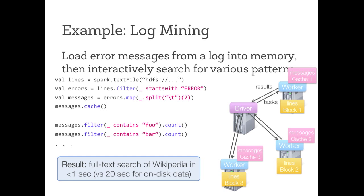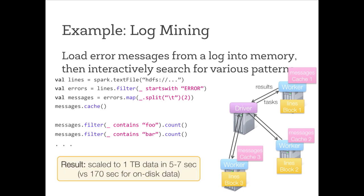This allows you to do very fast interactive analytics even over large datasets. As one example, this enables full text search over all of Wikipedia — not using a clever index, but actually scanning all the text of Wikipedia in less than a second. Even on disk it takes 20 seconds. And this scales up to very large amounts of memory — even at a terabyte, you can query in five to seven seconds versus 170 seconds off disk.